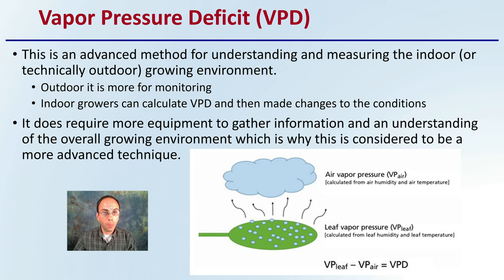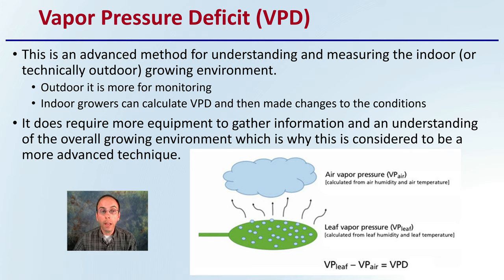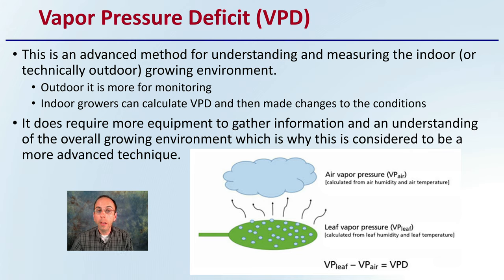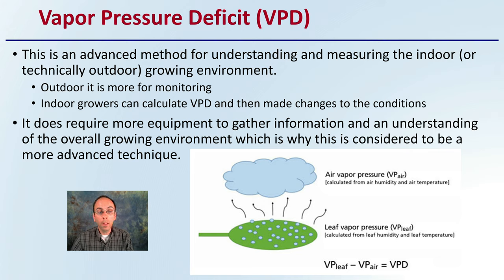First off, it's typically abbreviated VPD, and it will be throughout this presentation. This is an advanced method for understanding and measuring the indoor — or technically outdoor — growing environment. For outdoor, it's more used for monitoring, and for indoors, you can calculate the VPD and then make changes to your growing conditions. This does require more equipment to gather information and an understanding of the overall growing environment, which is why this is considered to be a more advanced technique.